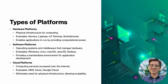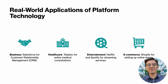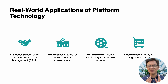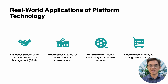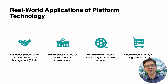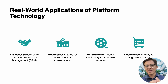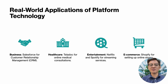That brings us to the next type of platform: software platforms. If hardware platforms are the foundation, software platforms are what bring them to life. A software platform is a system that provides the environment needed for applications to function. The most common examples are operating systems like Windows, macOS, and Linux. Your laptop wouldn't be very useful without an operating system — the OS acts as an intermediary, managing the hardware and allowing you to install and run software like web browsers, video editors, and games.